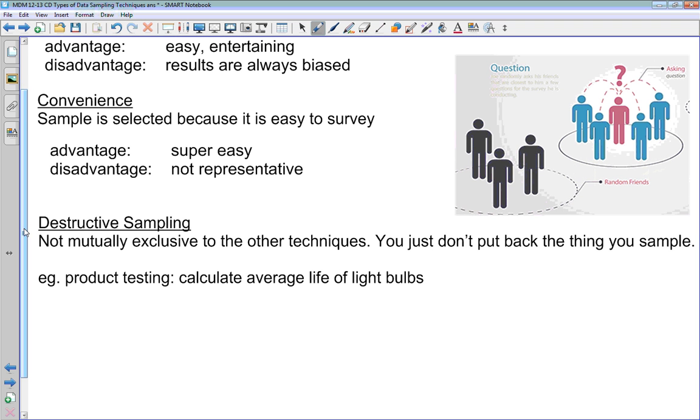And finally, destructive sampling. You can do destructive sampling using any of these other techniques that we've talked about. The big difference is that the thing that you pick out to be sampled cannot be put back into your population. A good example of this is when you're doing product testing. You want to calculate the average life of a light bulb. You take a light bulb off the assembly line, you plug it in, you turn it on, you wait and see how long it's going to last. When it's finally done, you can't put it back on the assembly line and put it in a box. It's done with. You've destroyed it. So you'll sometimes see this again in product testing.